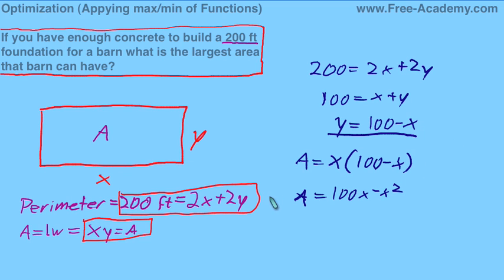Now recall we're applying maximums and minimums. We're going to need to find a maximum or minimum. We know how to do this—we're going to take the derivative of A with respect to x, which is going to give us 100 minus 2x equals 0. Which once we solve, we get x equals 50.